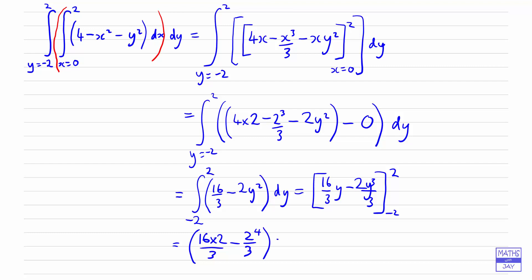Then we will subtract putting minus 2 in there, which gives us minus 32 over 3, and we will have minus 2 times negative 2 cubed, so that will be plus 2 to the 4 over 3. So we will have 32 minus 16 plus 32 minus 16 all over 3, and we will end up with 32 over 3.